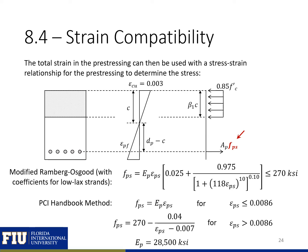We can then use the strain found from the previous step with whatever stress-strain relationship we want for our pre-stressing to calculate the stress in the pre-stressing. Two common ones are the modified Ramberg-Osgood equation with coefficients for low-relaxation strands, and the PCI handbook method, also described in Dolan and Hamilton's textbook.